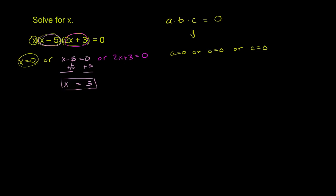And then finally over here, if we solve 2x plus 3 is equal to 0, we can subtract 3 from both sides. And we get 2x is equal to negative 3. And then we can divide both sides by 2. And we get x is equal to negative 3 halves. And we have our three solutions.